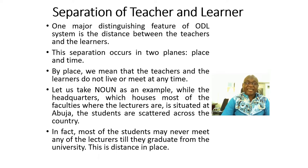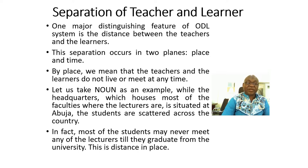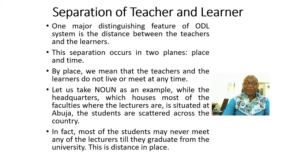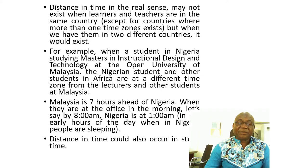By place, we mean that the teachers and the learners will not meet, or may not meet at any time. Taking the National Open University of Nigeria as an example: while the headquarters houses most of the faculties where the lecturers are and is situated in Abuja, the students are scattered across the country in about 78 study centers. In fact, most students may never see any of their lecturers until they graduate. This is what we mean by distance in place.